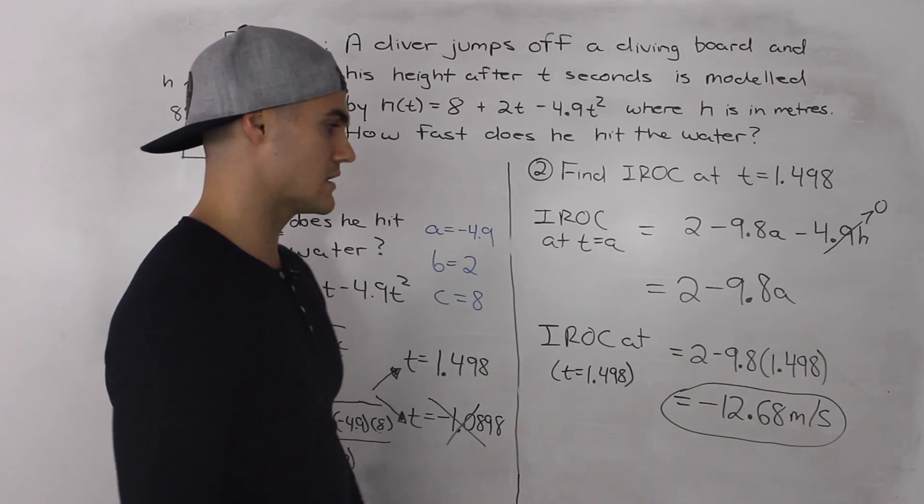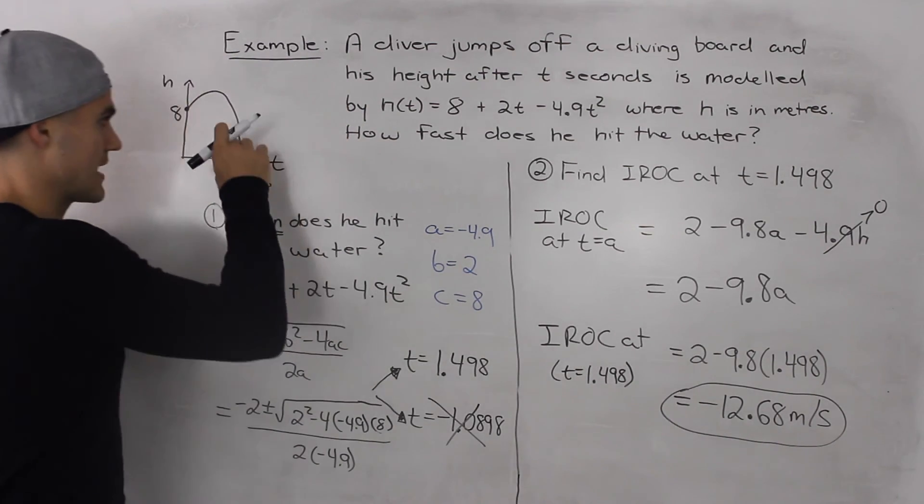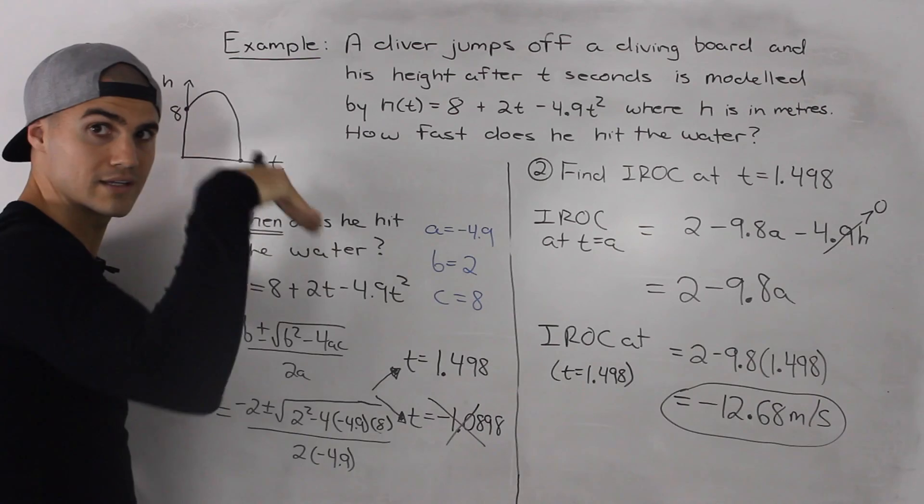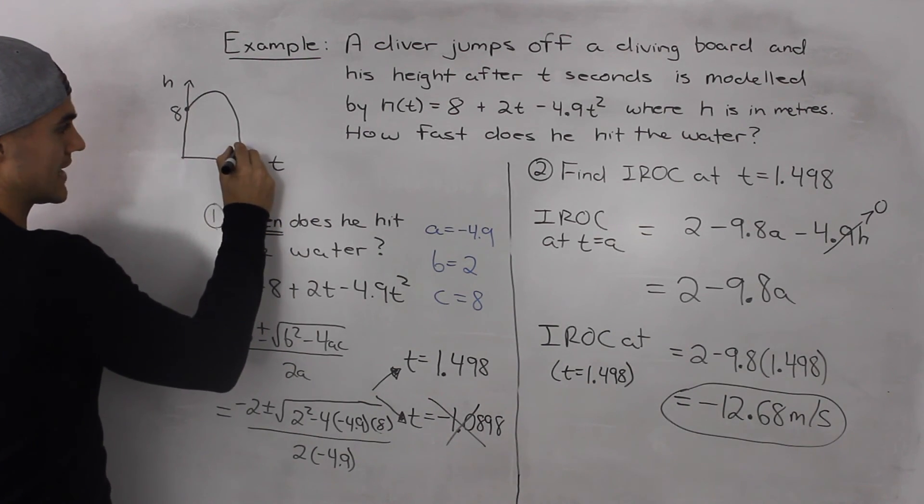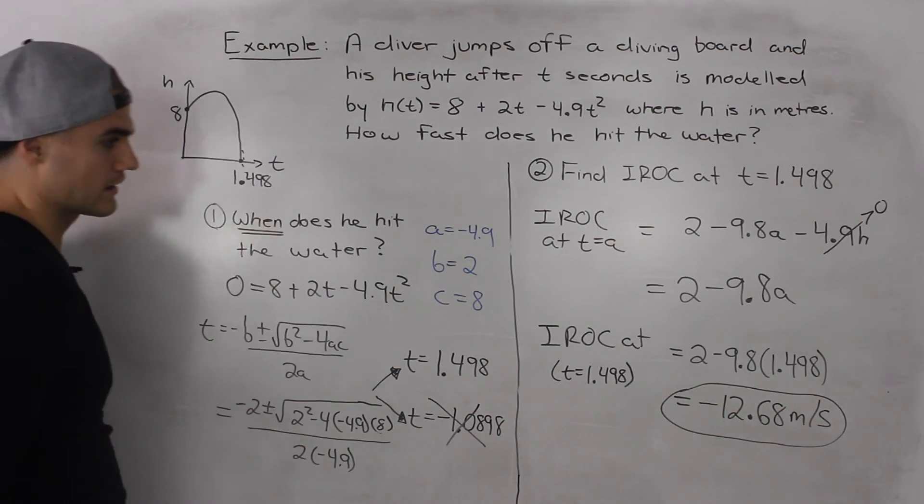Now the negative in the answer just represents that he's hitting the water going downwards. So if we were to draw like a tangent here, it would have a negative slope.